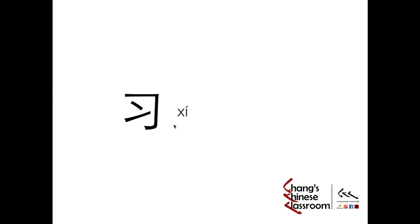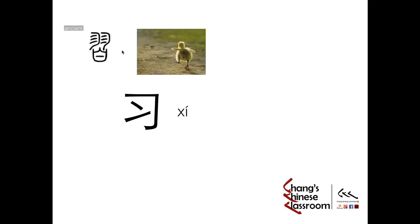Next character: Xi. I actually like this character. This is the ancient one — the above part is the wing of a bird. And the lower part — it's really hard to tell because we have different explanations. Some people say that's a baby bird, so the original meaning of Xi is actually a baby bird practicing to fly, flying frequently. So later on it's easy to link to the meaning: to practice, and then it became meaning to study, and also to practice.